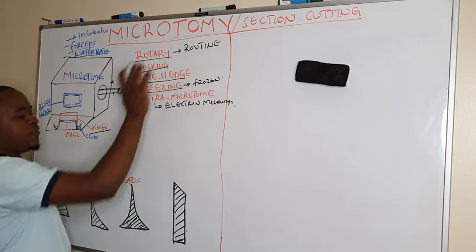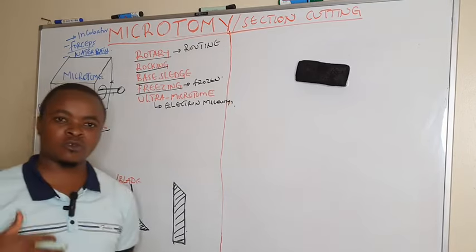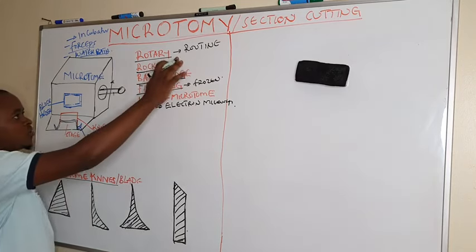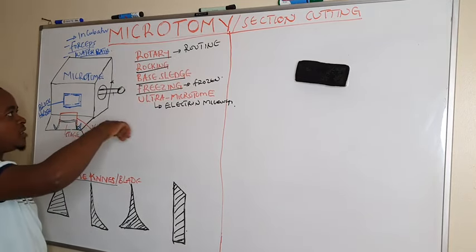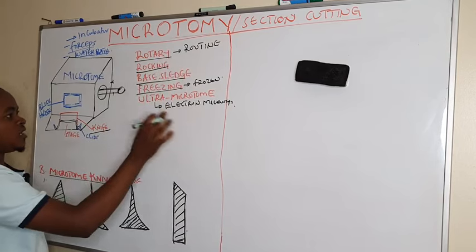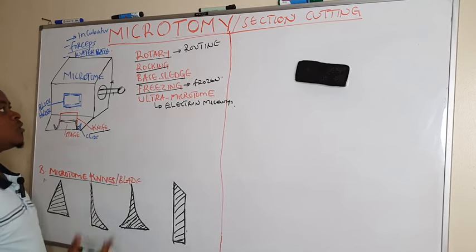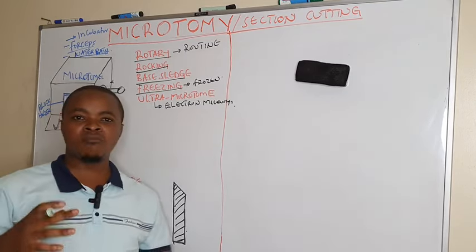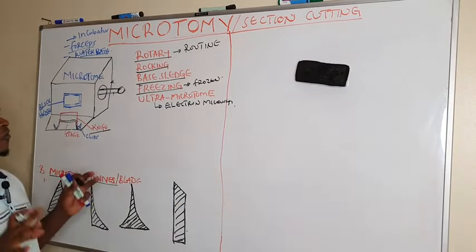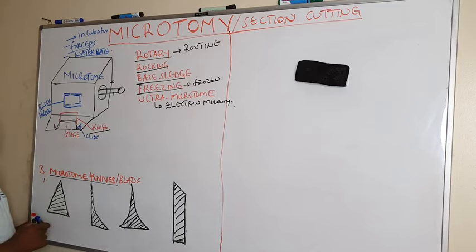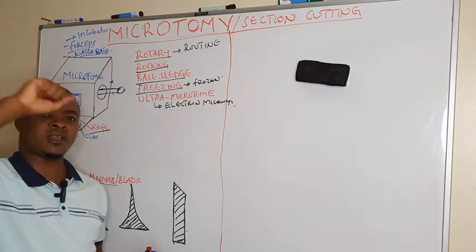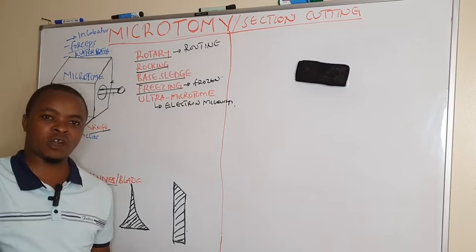So these are the different types of microtomes: Rotary Microtome, which is routinely or commonly used, then locking, base sledge, freezing, and ultramicrotome. The most commonly used is the Rotary because it is stable and it enables cutting of all types of sections. It is called Rotary because the block holder rotates.